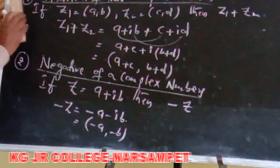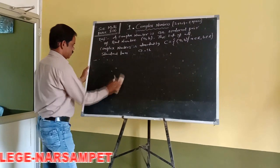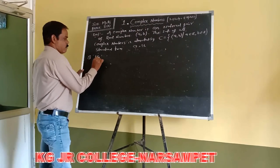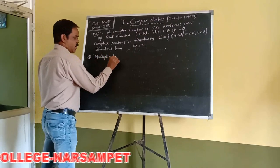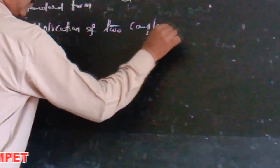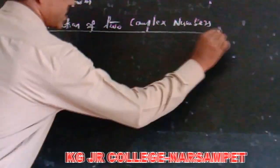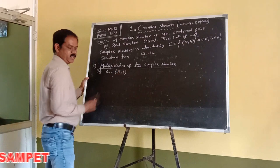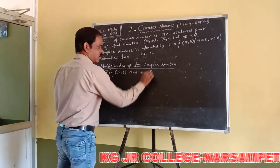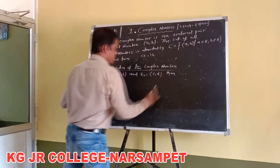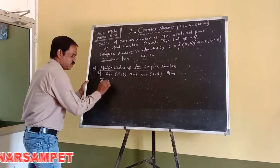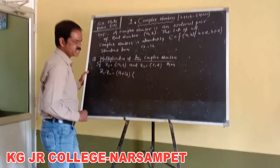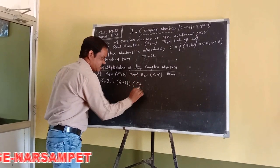Next: multiplication of two complex numbers. We are taking two complex numbers: Z1 equals ordered pair (a, b) and Z2 equals ordered pair (c, d). Then the multiplication Z1 × Z2 equals — its complex number form is (a + ib) × (c + id).